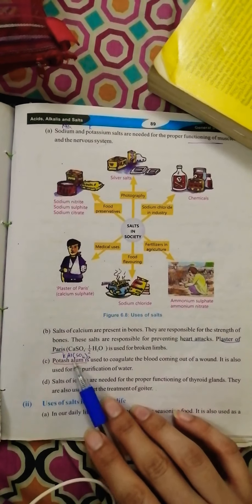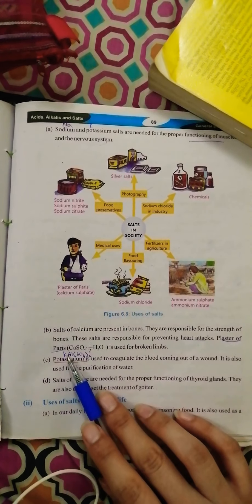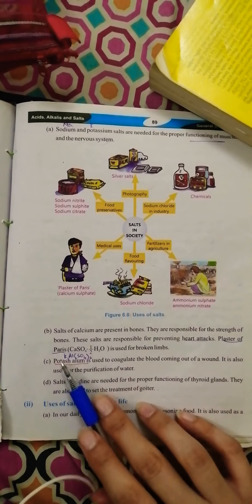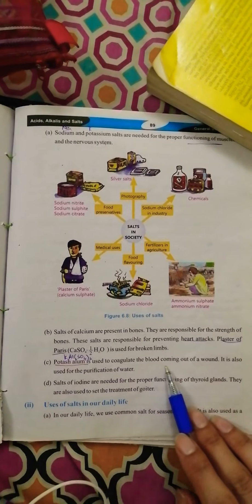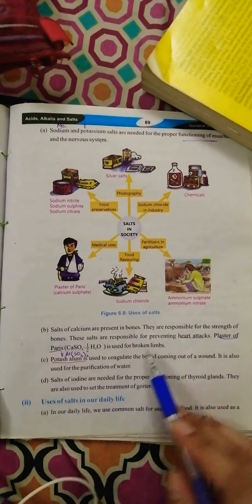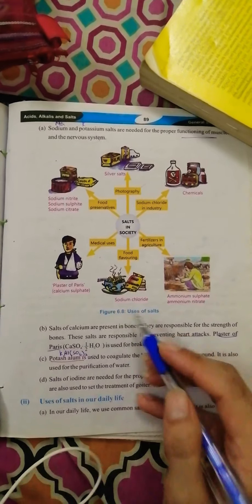Potassium alum is a combination of potassium and aluminum sulfate. Potassium aluminum sulfate is known as potassium alum. It is used to coagulate the blood coming out of a wound. It is also used for purification of water.